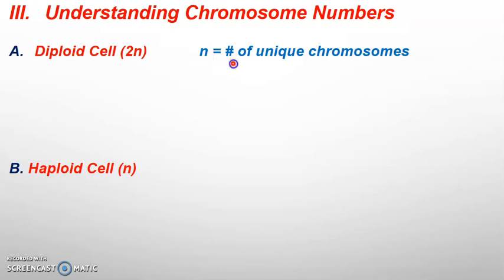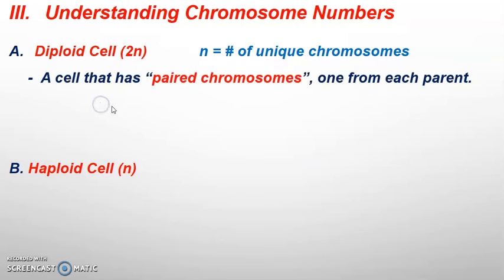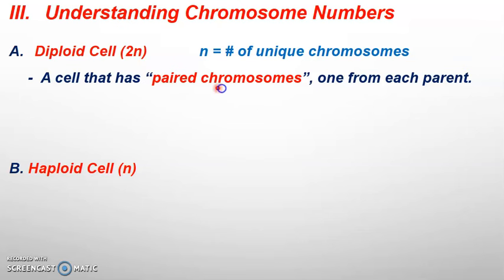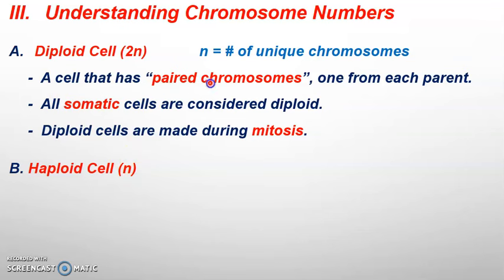N refers to the number of unique chromosomes that an individual species can have. For humans, n is actually equal to 23 — there really are only 23 unique different types of chromosomes that humans possess. However, we have a total of 46 chromosomes. A diploid cell is going to have paired chromosomes, one from each parent. So 2n equals 2 times 23, which is a total of 46. We're going to have 23 pairs of chromosomes for a total of 46 in all of our somatic cells, and all somatic cells will be considered diploid.